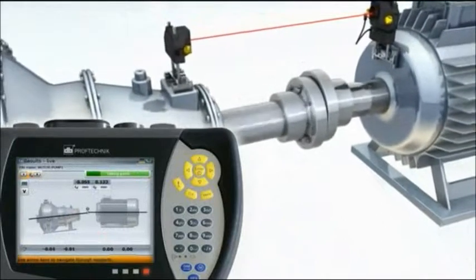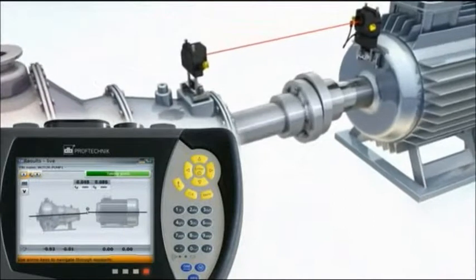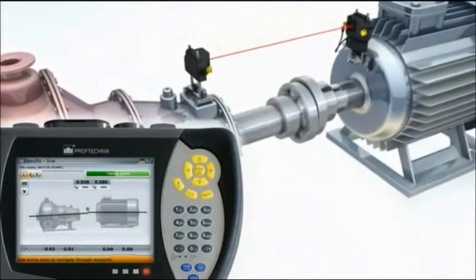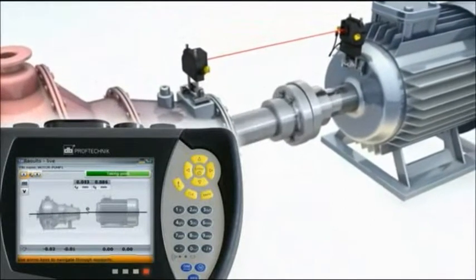Manufacturers' targets often do not reflect the real machine centerline movements due to thermal growth, pipe strain, and other dynamic factors. By applying the measured values, machines are precisely aligned to their true operating conditions.